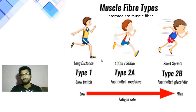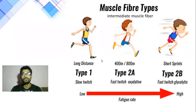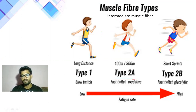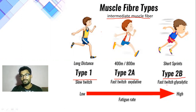We have Type A and Type B. Then we have Type 1 and Type 2 — Type 2A and Type 2B. Type 1A is slow twitch muscle fiber. Type 2A is intermediate muscle fiber. Type 2B is the real fast twitch muscle fiber.